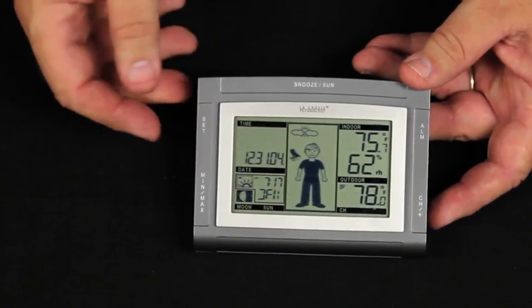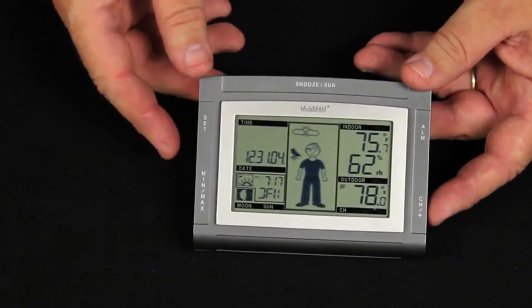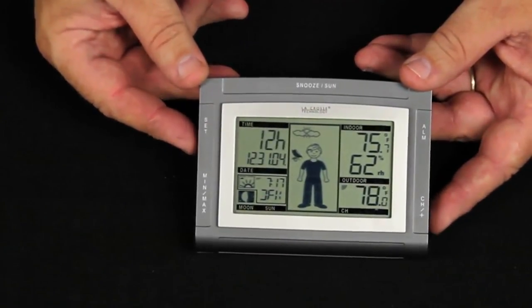Pressing the set button again I have the option of the 12 hour clock or by pressing the channel button I can go to the 24 hour military type clock. I'm going to leave it in 12 hour.